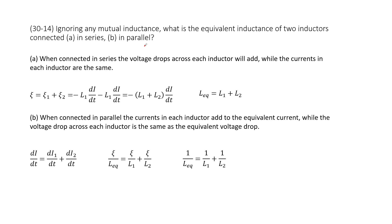Chapter 30 is about inductance, electromagnetic oscillations, and AC circuits. We need to find the equivalent inductance for two inductors.